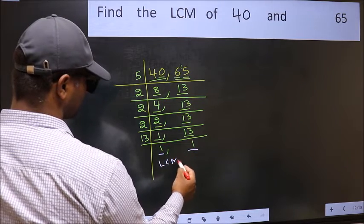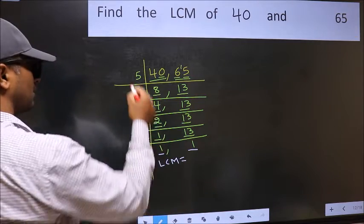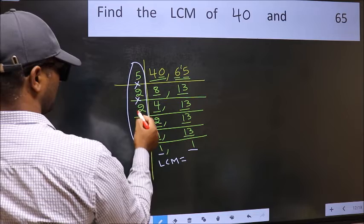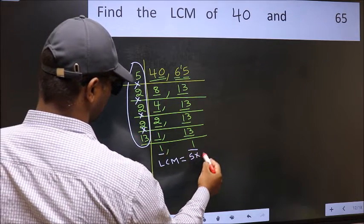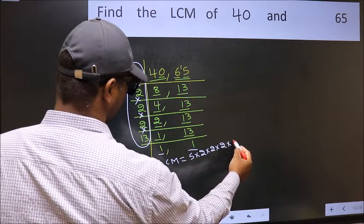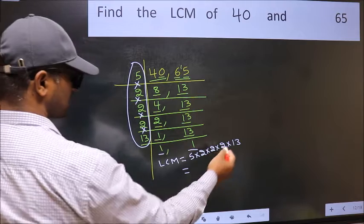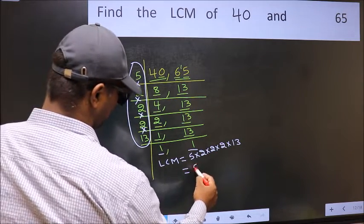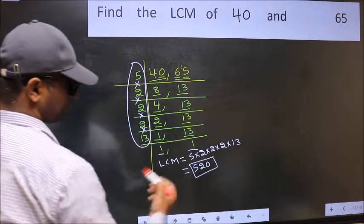So our LCM is the product of these numbers. That is 5 times 2, times 2, times 2, times 2, finally times 13. When we multiply these numbers, we get 520. So 520 is our LCM.